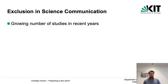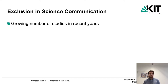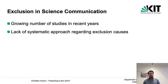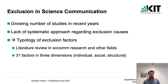This problem has gained attention in the last years and more and more researchers focused on it. Today, it is clear that science communication, at least in the West, often reaches only a very specific part of the population that is typically white, male, academic, and better learning. However, there is still a lack of systematic approaches regarding the underlying factors that cause exclusion.